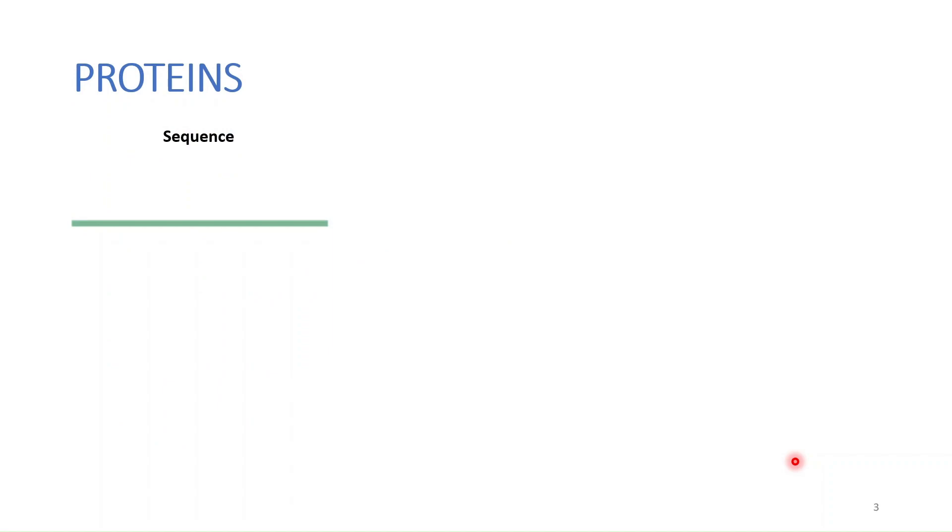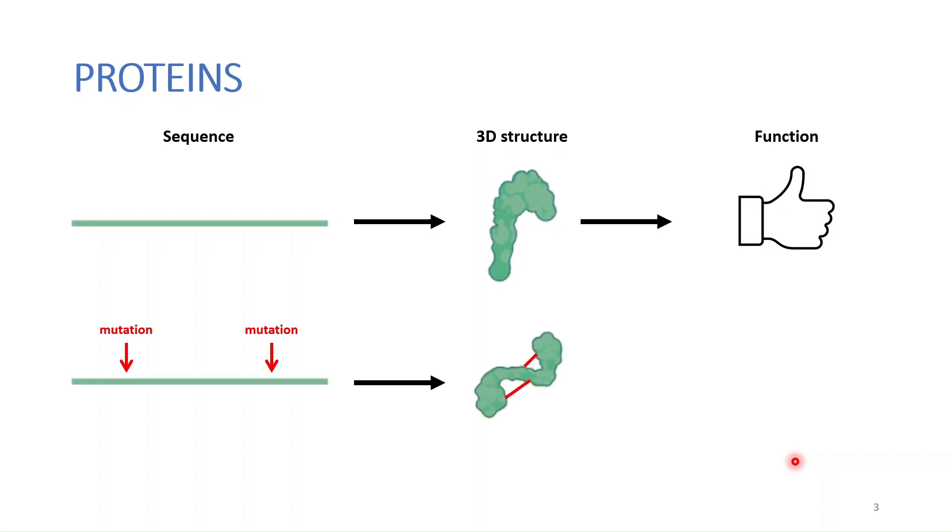So this is a protein. If you imagine the green line to be a sequence, we know that this sequence is responsible for maintaining the protein structure and that the protein structure is ultimately responsible for the protein function. If we were to introduce a mutation into this sequence, the structure will be altered and the function won't be carried out correctly. So we can say that these sequence regions that are critical for maintaining the protein structure have to be maintained in evolution.